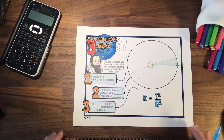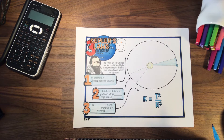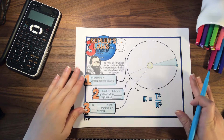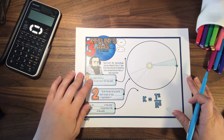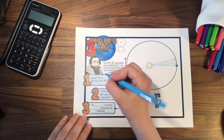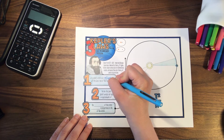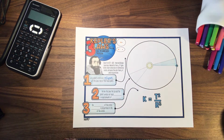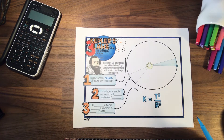Kepler, working for Tycho Brahe, used a lot of observational data. He was a very good mathematician and he figured out that every planet's orbit is an ellipse, not a circle, with the Sun at one of its focus points. You'll notice here that I drew Earth's orbit around the Sun as an ellipse, not as a perfect circle.